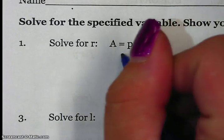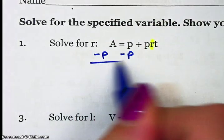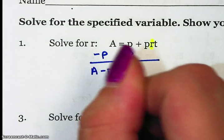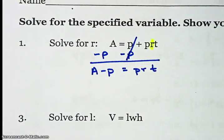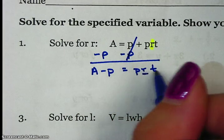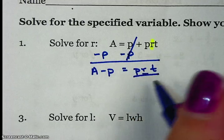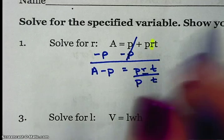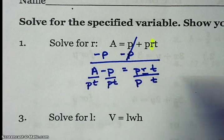So to get rid of this P, I'm going to subtract P from both sides. That gives me A minus P equals PRT because this is gone, it's 0. Now I'm solving for this R. The operation between PRT is multiply. To undo multiply, I'm going to divide. I'm going to divide by P and by T.